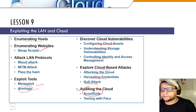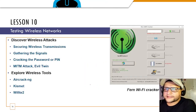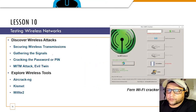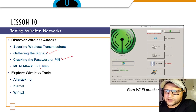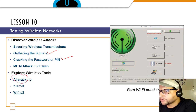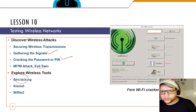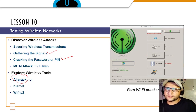In Lesson 10, you'll discover wireless attacks — secure wireless transmission, gathering signals, cracking passwords and PINs, and performing MITM and evil twin attacks. Tools used include Aircrack-ng, Kismet, and WiFi-Foo to understand different Wi-Fi attack techniques.